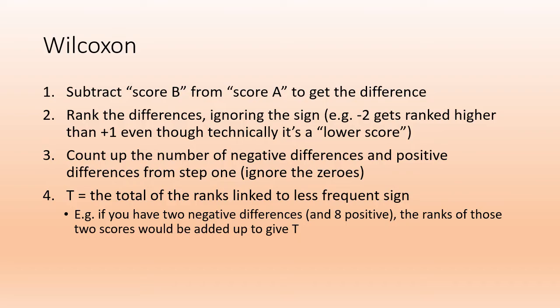Wilcoxon is similar to the Sign test. You subtract the scores, then you rank the differences lowest to highest. Lowest gets a one, highest gets whatever. Ignore the sign once you've done that. Count up the number of negative differences and positive differences, and T, the final result, is the total of the ranks linked to the less frequent sign. Again, I've put an example at the bottom.